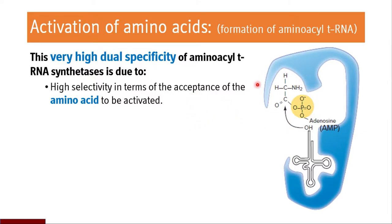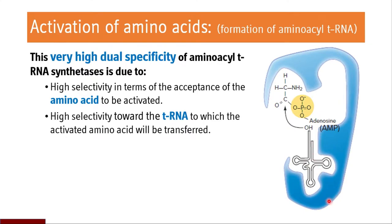This very high dual specificity of aminoacyl tRNA synthetase is due to the high selectivity in terms of acceptance of the amino acid to be activated. This enzyme is specific for glycine because the site is specific for glycine, making it selective for glycine only. Secondly, this site is specific for a given structure of tRNA which is specific for glycine. So this enzyme is specific for both amino acid as well as tRNA — it has a very high dual specificity.